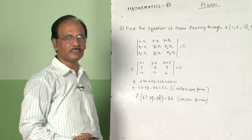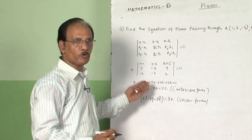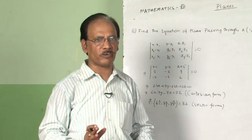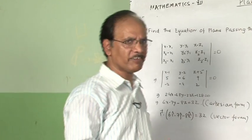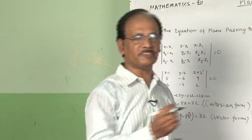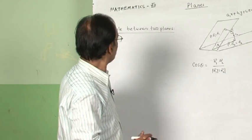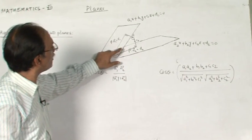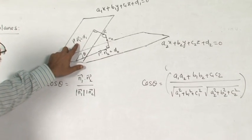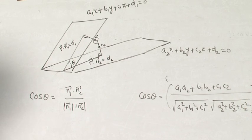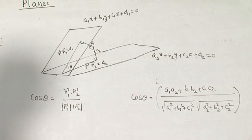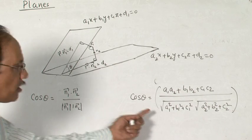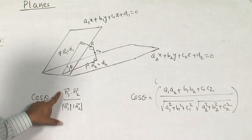Now I think you will be able to do similar types of questions. You can comfortably do any question — if given in vector form, convert to Cartesian; if given in Cartesian, convert to vector form. This inter-conversion you should be very familiar with. Now, to find the angle between two planes — both forms of the equations are given — you can use either form with the appropriate formula.